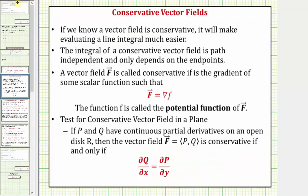For a quick review, we know if a vector field is conservative, it will make evaluating a line integral much easier. The test for a conservative vector field in a plane is given here, where if P and Q — the x and y components of the vector field F — have continuous partial derivatives on an open disk R, then the vector field is conservative if and only if the partial of Q with respect to x equals the partial of P with respect to y.